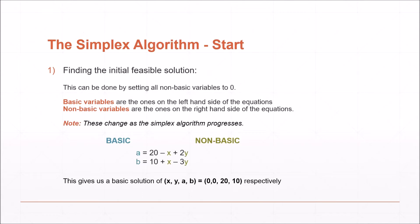In order to perform the simplex algorithm, we start by finding the initial basic solution. This is done by setting all non-basic variables to 0, giving us a value of a equals 20 and b equals 10. It is worth noting that the non-basic variables are the ones on the right-hand side of the equation, and the basic variables are on the left. These variables may change throughout the course of the algorithm.